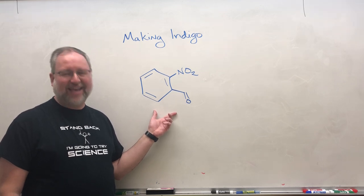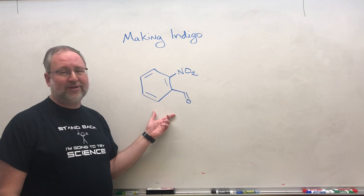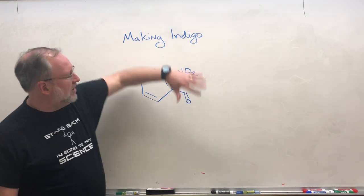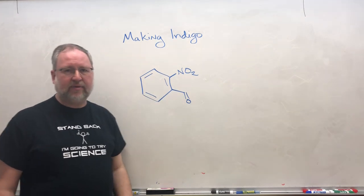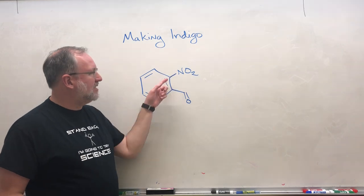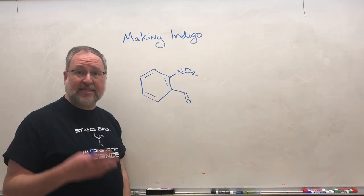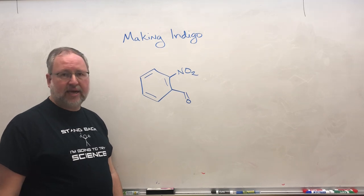Alright, thank you for pausing the video. I'm sure that all of you did. When you look at this compound, without the nitro group, this is benzene with an aldehyde, so we would call that benzaldehyde. And with a nitro group this is nitrobenzaldehyde,